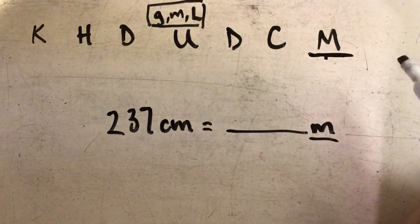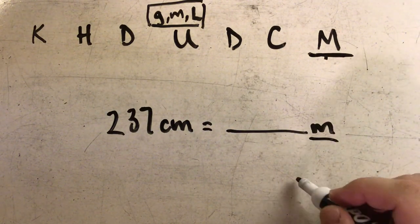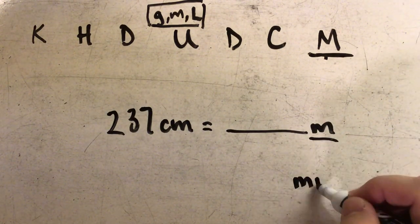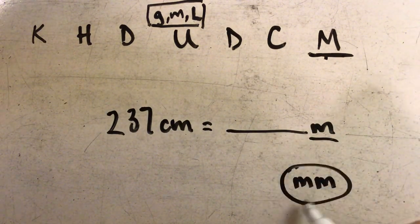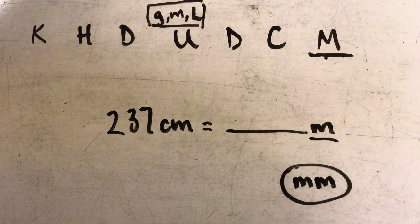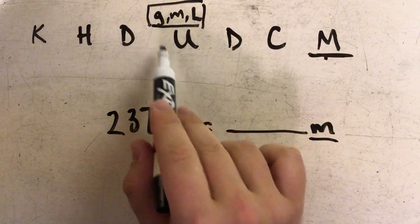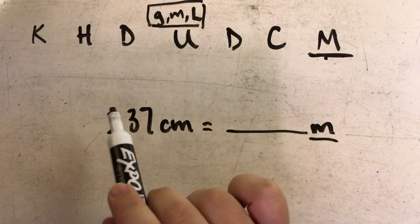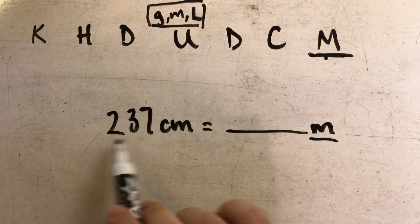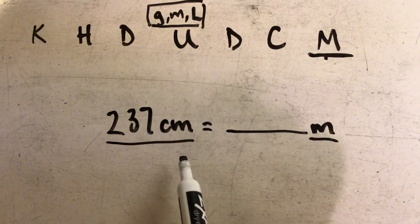Meters would be M, but millimeters would be actually two M's if I were looking for millimeters. So if I'm looking for meters, I'm really trying to get to my basic unit, which was right here. So I'm going to again start on my map with whatever is given to me.